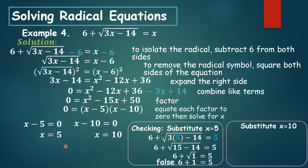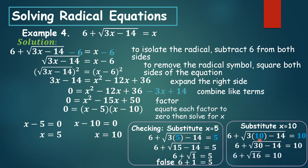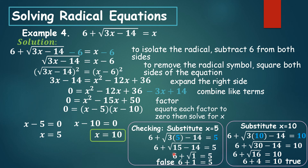Let's substitute x equals 10: 3 times 10 is 30, minus 14 is 16, the square root of 16 is 4 (the principal root), and 6 plus 4 is 10, which is true. It means the solution to this equation is 10.